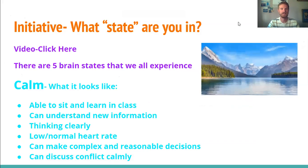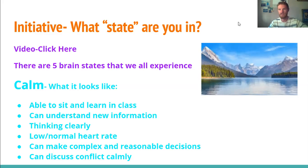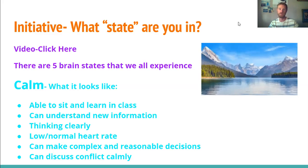The first state is called calm. If you're in your calm state, you're able to sit and learn in class easily. You don't have too much energy, but you're awake. You can understand new information and think clearly. So if a teacher is explaining something and you're in your calm state, you can take in the information and understand it — your brain isn't scattered. Your heart rate is either lower than normal or just right at a normal rate, so your heart's not pounding super fast.